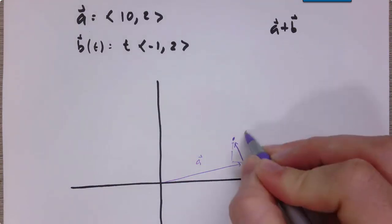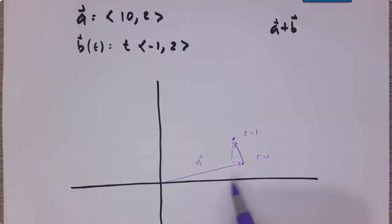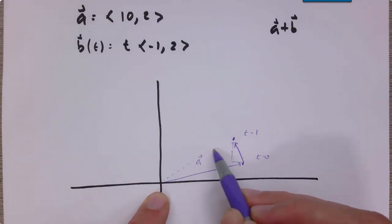So this point would be where the vector sum takes me at time 1. So again, here's the a vector. Here's the b vector when time equals 1. And if I was going to write the resultant vector, when you add them together, it would be that dashed one.